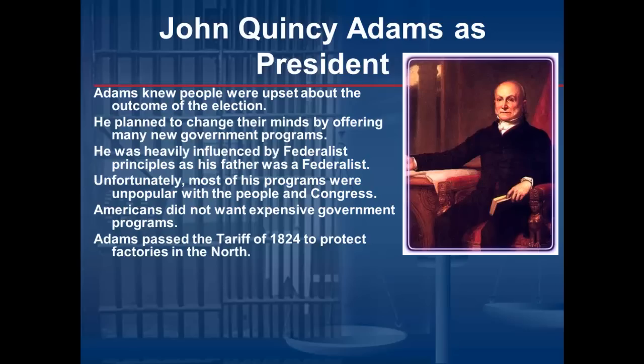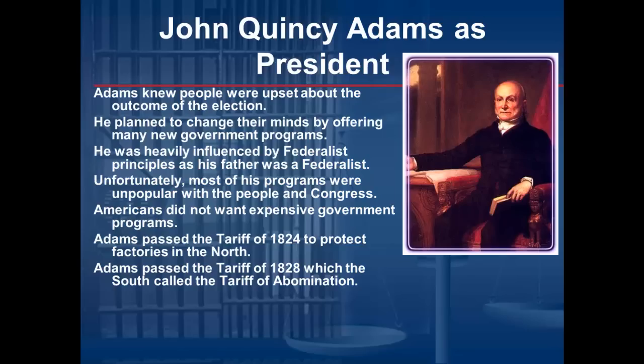Adams then followed up by passing a tariff. The tariff of 1824 was passed to protect factories in the North — it's called a protective tariff. By raising the prices of goods being imported, especially from Britain, it allowed American prices to stay low and people tended to buy American because it was cheaper. Unfortunately, the tariff of 1824 was not enough, and so Adams also passed the tariff of 1828. It was an extremely high percentage tariff, which the South referred to as the Tariff of Abominations.